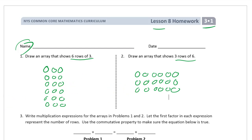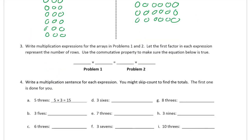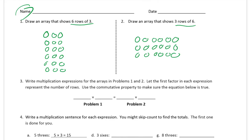Write a multiplication expression for the arrays in problems one and two. It says let the first factor in each expression represent the number of rows. So in problem one, we have six rows of three. And in problem two, we have three rows of six. Look at this, see the equal sign? We should have the same factors in a different order on either side of the equal sign. These are both equal to 18. Six times three, three times six. That's using the commutative property.